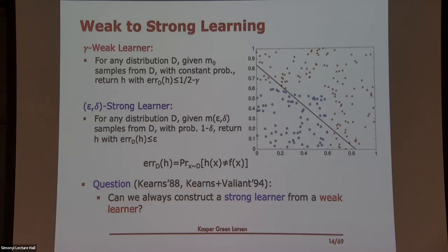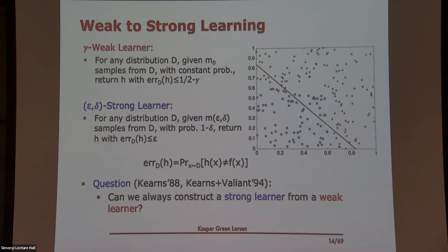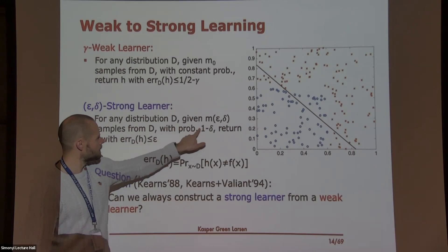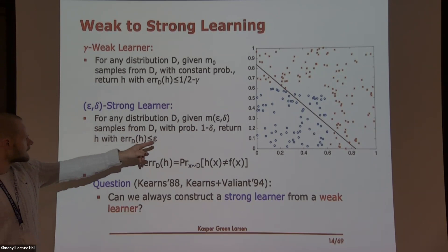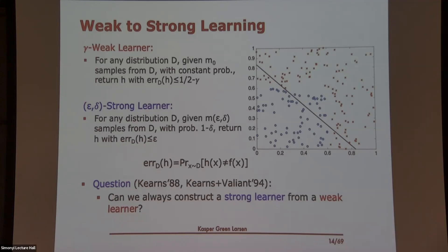Formally, a weak learner is defined as follows: for any data distribution D, if I have enough examples — more than some constant M_0 — then with constant probability, the learner outputs something with error at most 1/2 minus gamma under D, so it's a little bit better than random guessing. An epsilon-delta strong learner says: given target error epsilon and success probability 1 minus delta, there's some M(epsilon, delta) such that if I have that many samples, with probability 1 minus delta the learner outputs a hypothesis with error at most epsilon under D. The question is: can we take a gamma-weak learner and turn it into an epsilon-delta strong learner?